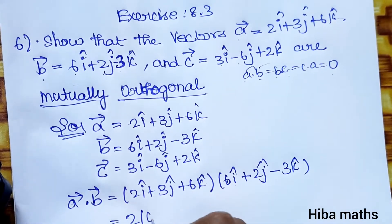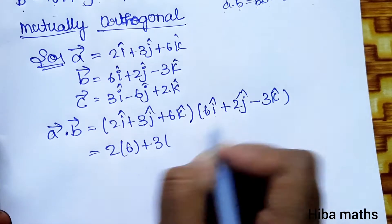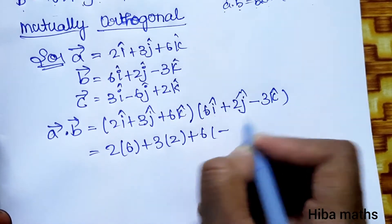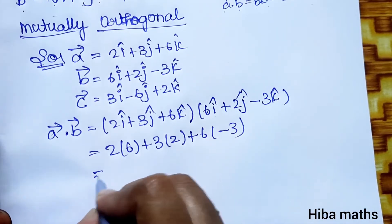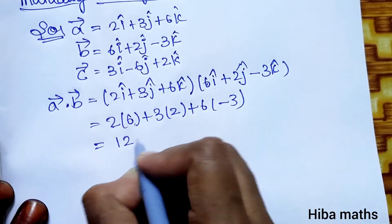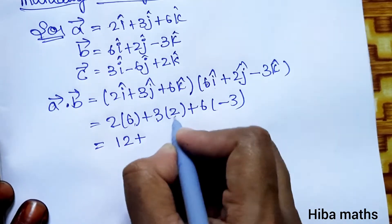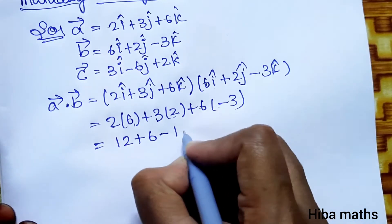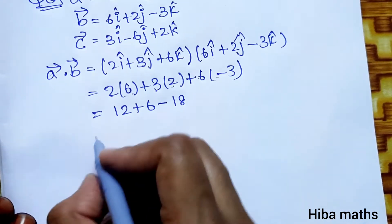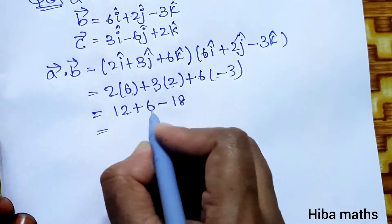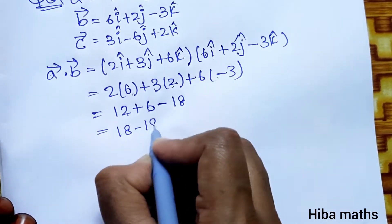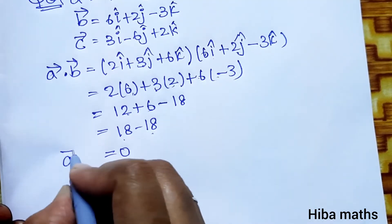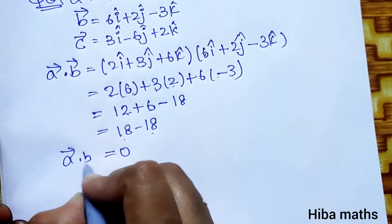A·B equals (2i plus 3j plus 6k) dot (6i plus 2j minus 3k). That gives: 2 into 6, plus 3 into 2, plus 6 into minus 3. That is 12 plus 6 minus 18. 12 plus 6 is 18, and 18 minus 18 is 0. So A vector dot B vector equals 0.